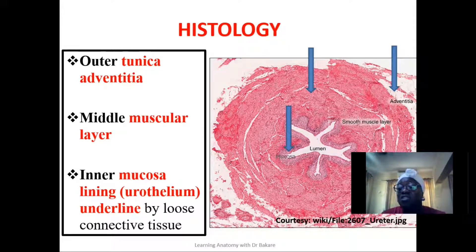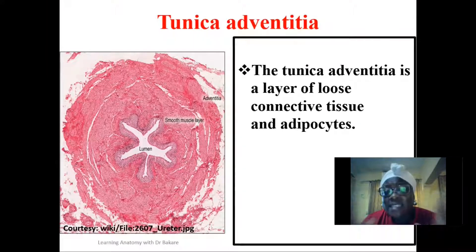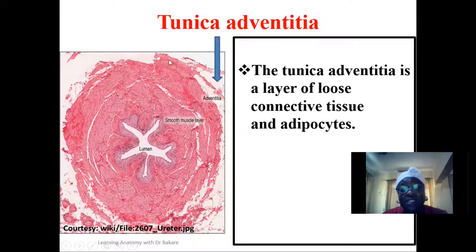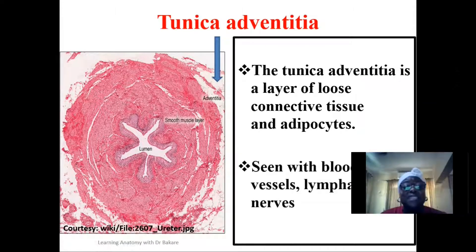The tunica adventitia is the most external layer and is made up of loose connective tissue. Within this connective tissue you see deposits of adipocytes, which are fat cells — the white-looking cells distributed around the external part of the ureter. Also in the tunica adventitia you find blood vessels, nerves, and lymphatic vessels.